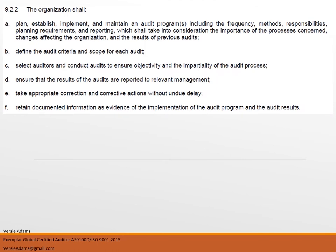Moving on to clause 9.2.2: the organization shall plan, establish, implement, and maintain an audit program, including the frequency, methods, responsibilities, planning requirements, and reporting. This shall take into consideration the importance of the process concerned, changes affecting the organization, and the results of previous audits. Define the audit criteria and scope for each audit. Select auditors and conduct audits to ensure objectivity and impartiality. Ensure that the results are reported to relevant management. Take appropriate correction and corrective actions without undue delay, and retain documented information as evidence of the audit program and audit results.